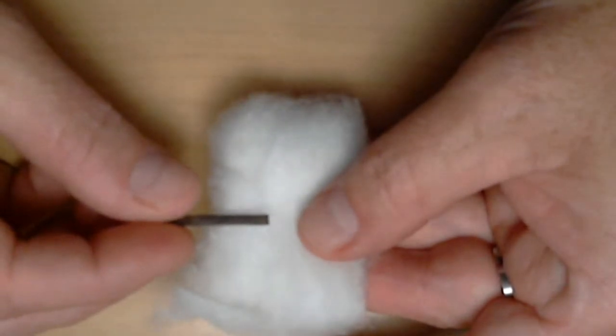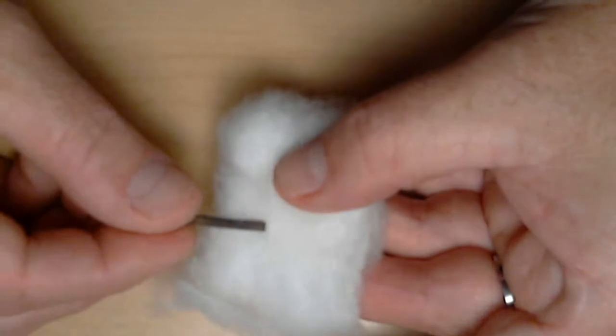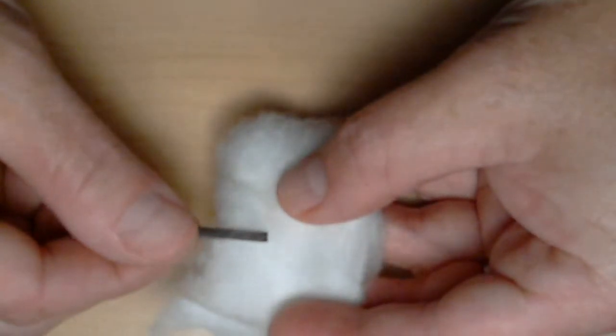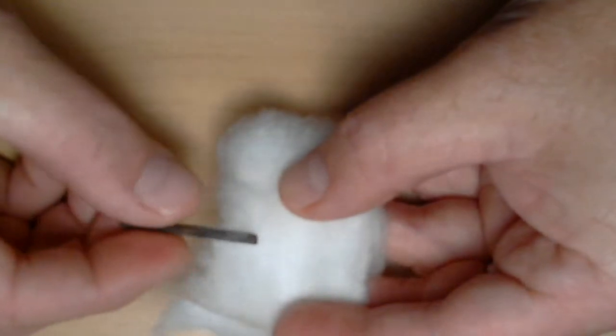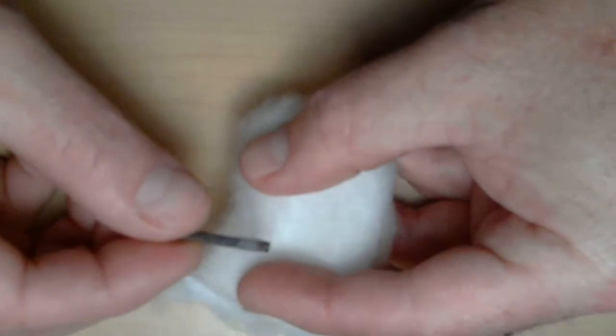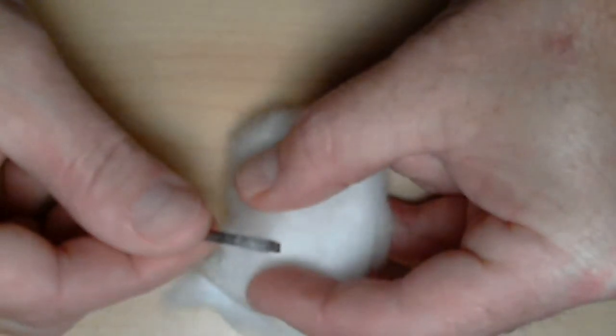You just take your mesh and lightly touch it to the rolled cotton. And what you'll see is it starts to rake up the cotton. You want to move it around a little bit so you get good coverage. But again, you want to try and keep it as thin as you can.